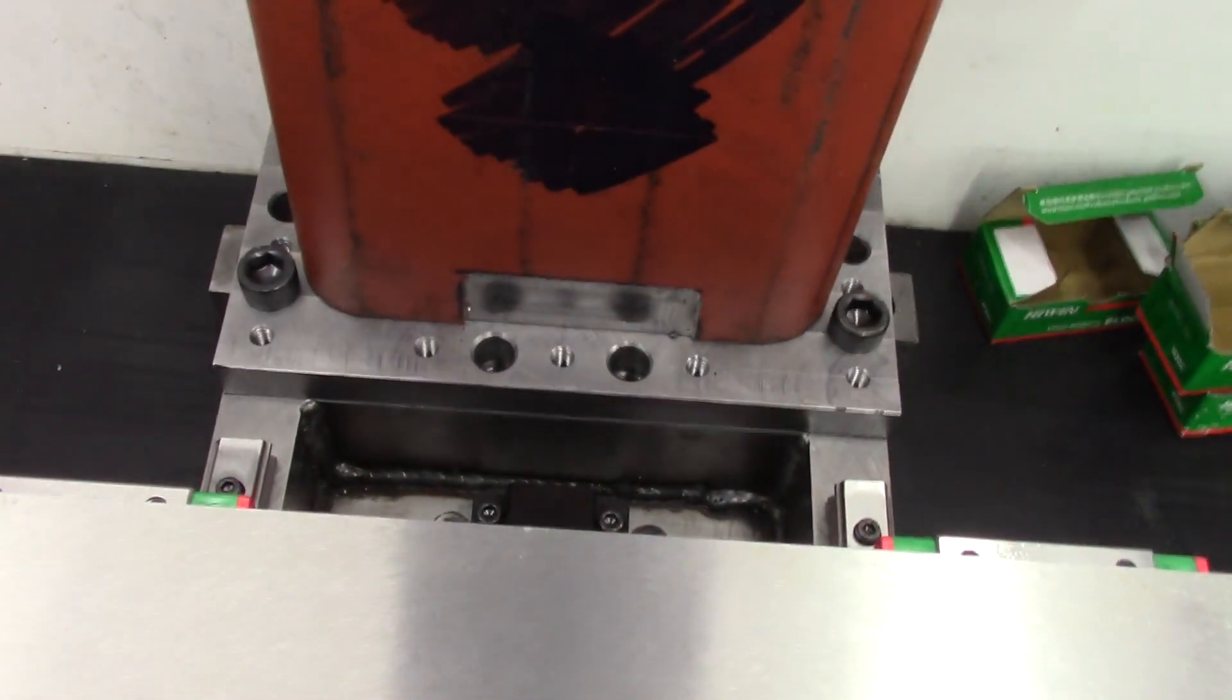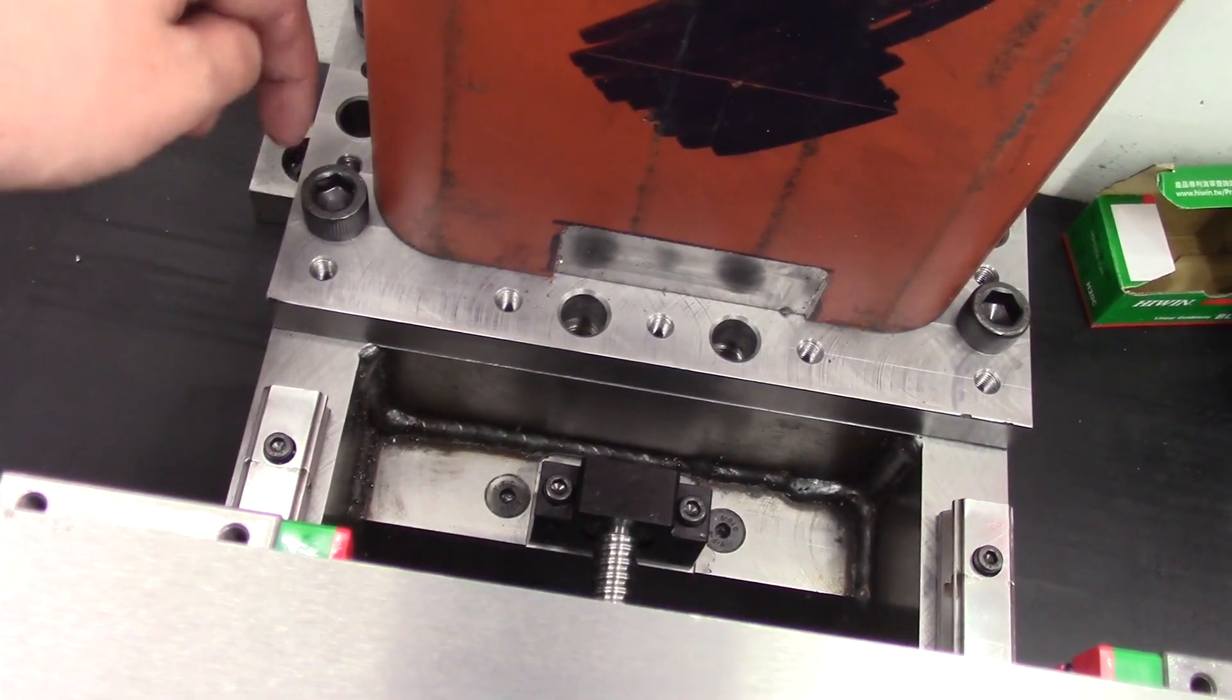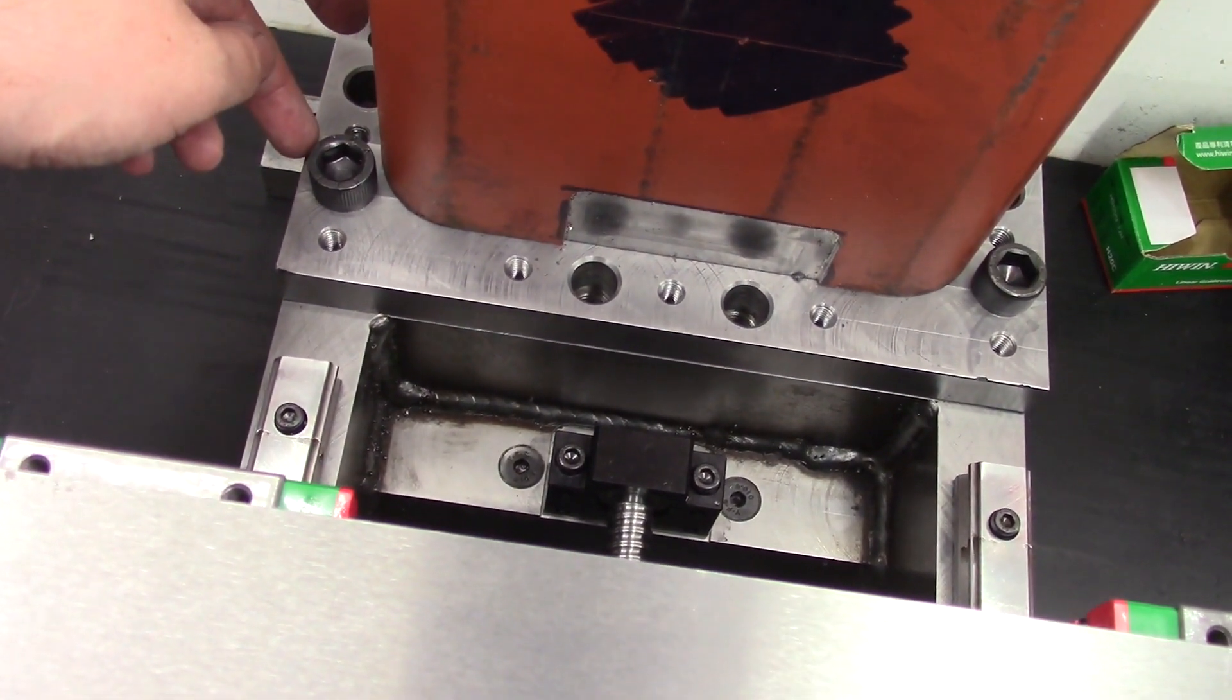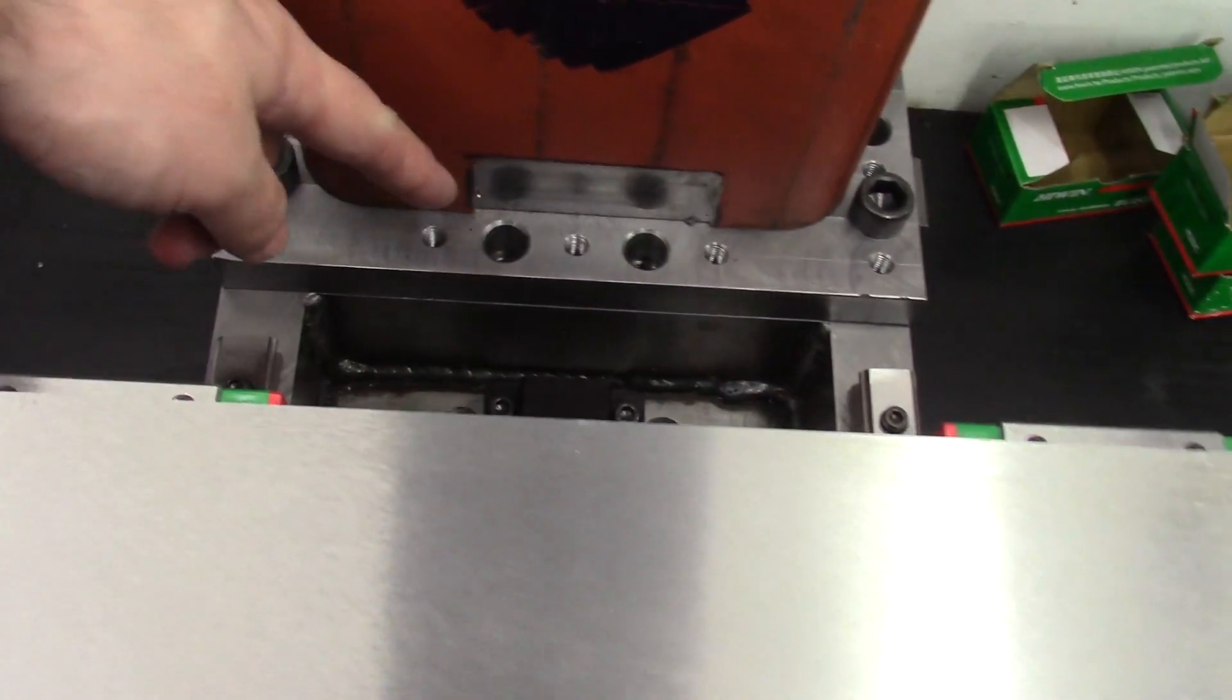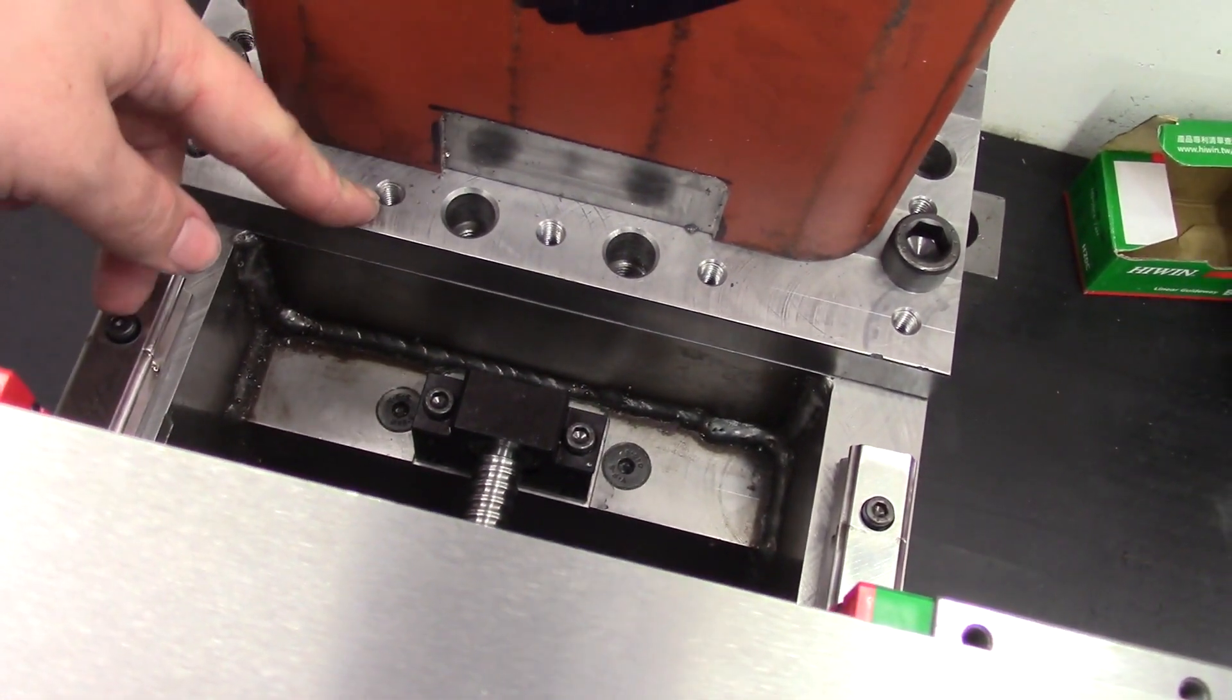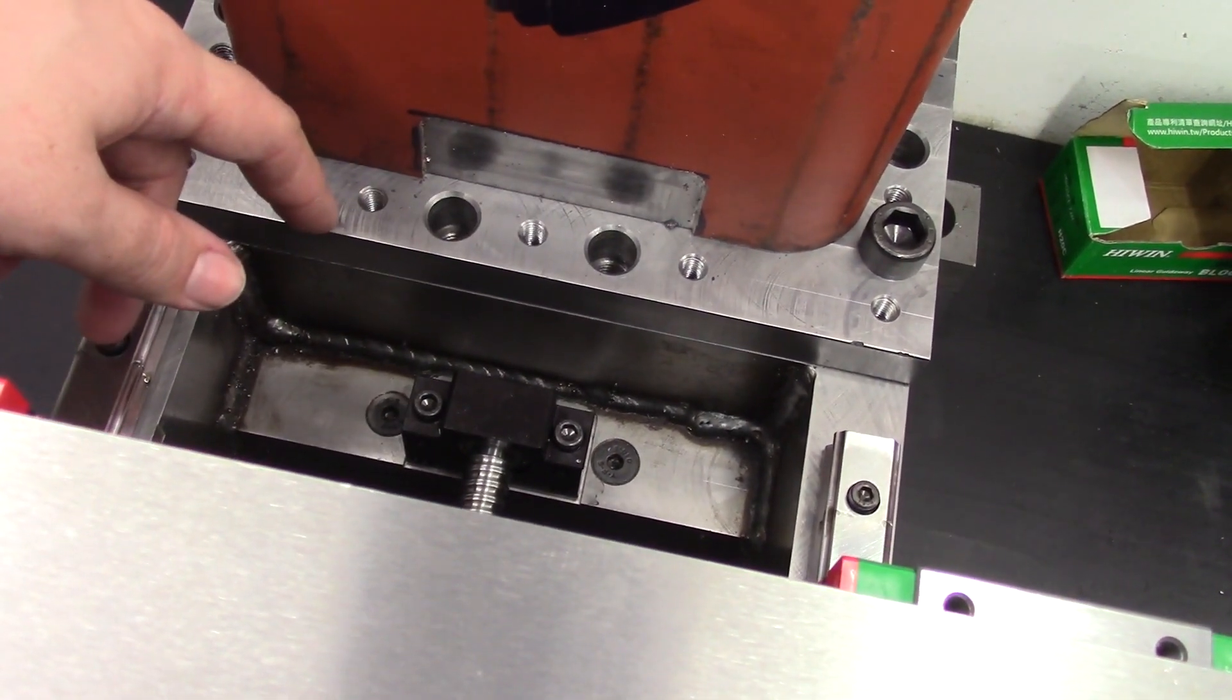And then at the back here we have the column. So this is a 20mm thick plate of steel, bolted all the way around the outside with M14 bolts. Jacking screws in case I need to level the column.